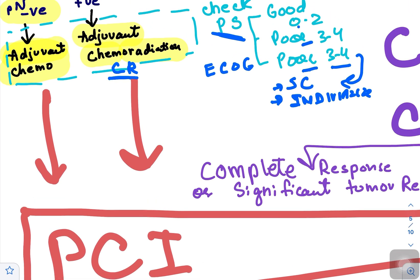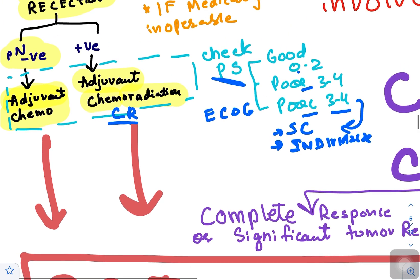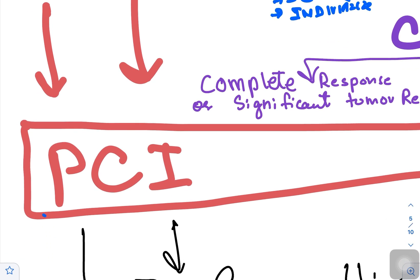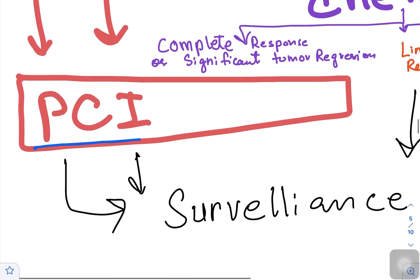After giving adjuvant chemo and adjuvant chemoradiation according to lymph node involvement, send patient for PCI, which is prophylactic cranial irradiation, and then keep the patient under surveillance.